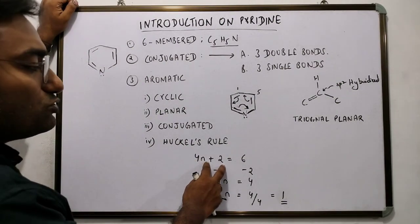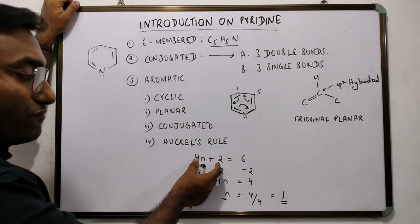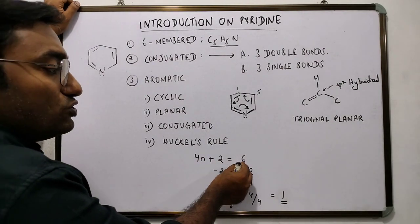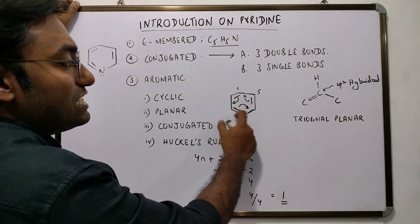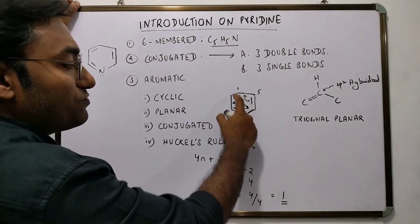Huckel's rule is 4n plus 2 pi rule. You write 4n plus 2 equals 6 resonating electrons. 1, 2, 3, 4, 5, 6. 6 resonating electrons of the pyridine.